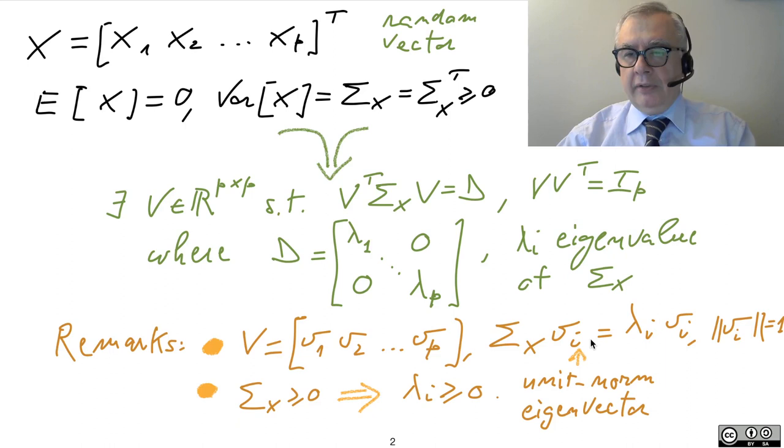So VI is an eigenvector if sigma X VI is equal to lambda I VI. And we just take unit norm eigenvectors, which you can always do by normalization. And you build the matrix of the eigenvectors. You know that for a symmetric matrix, these eigenvectors are orthogonal. And this is going to guarantee this property for the transformation matrix.